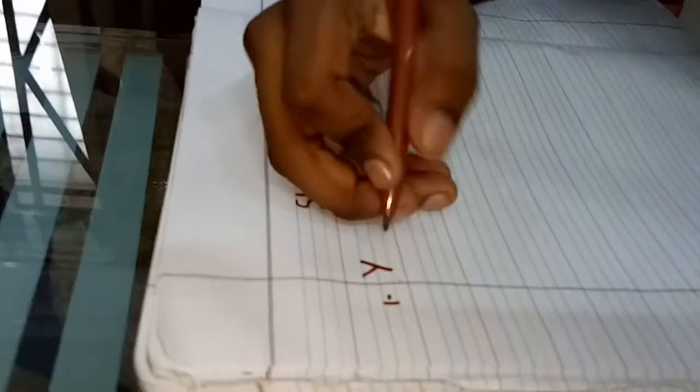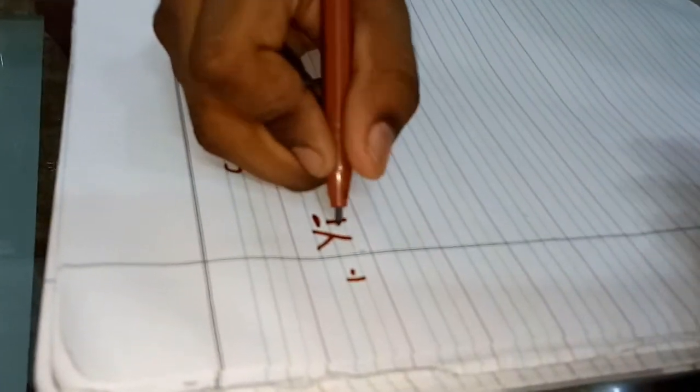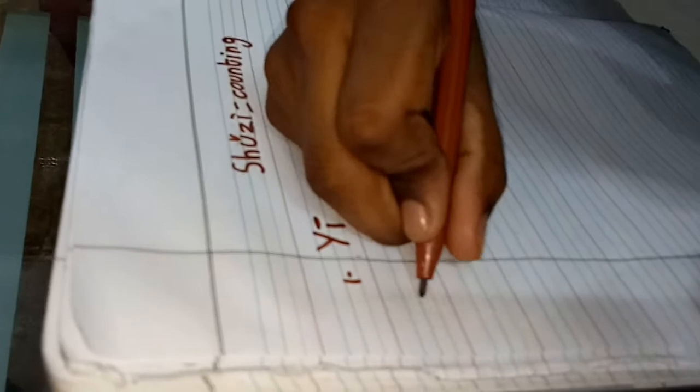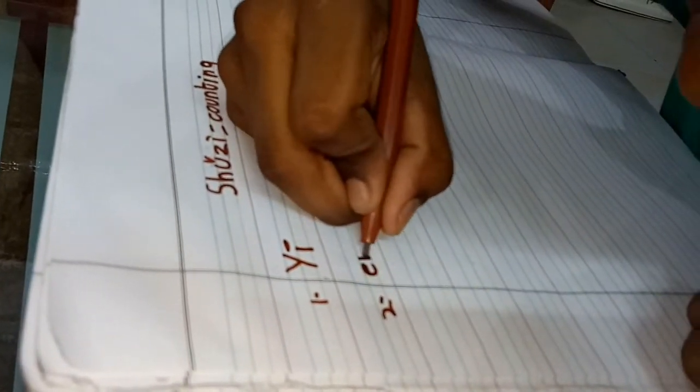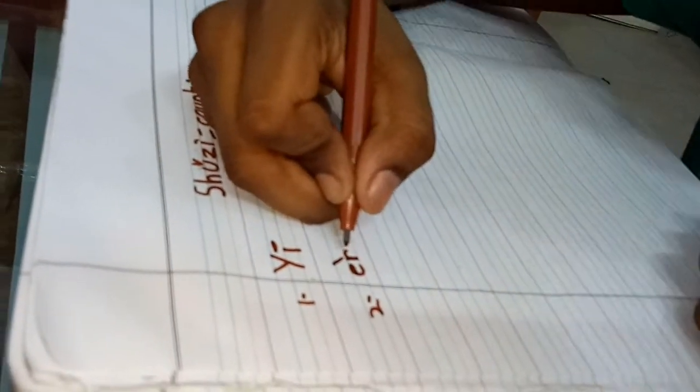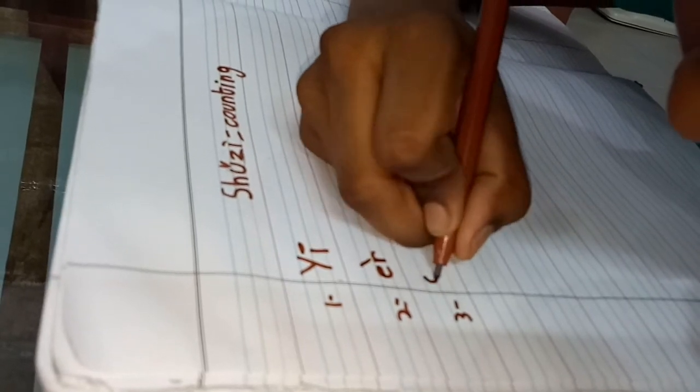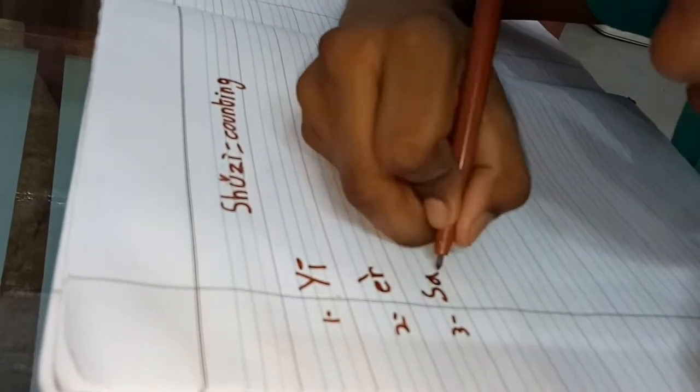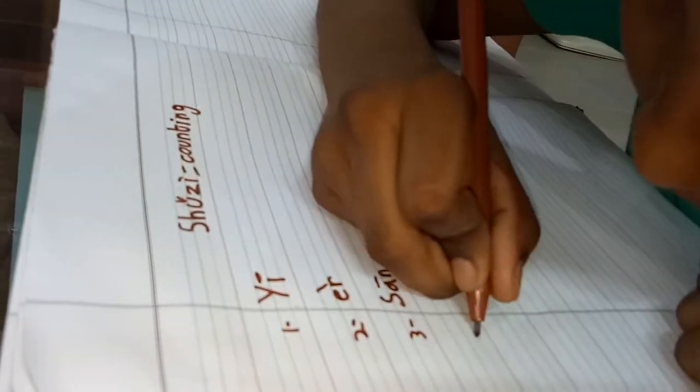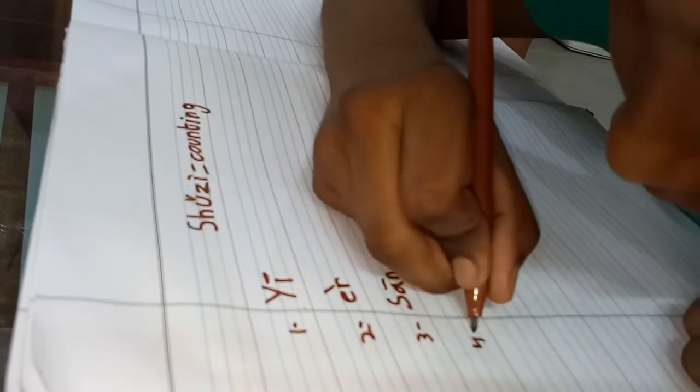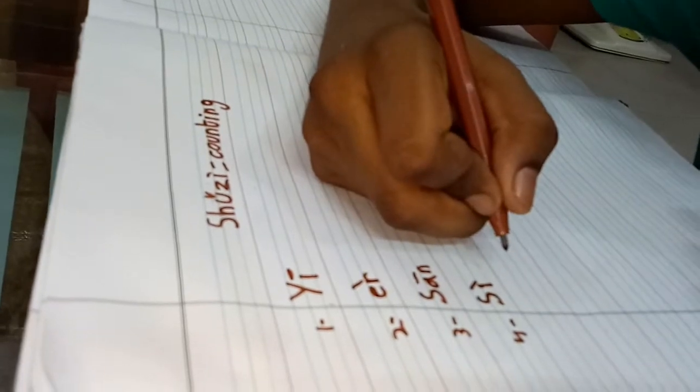The first one is yi. Yi means one. Number two is er. Er means two. Number three is san. San means three. Number four is si. Si means four.